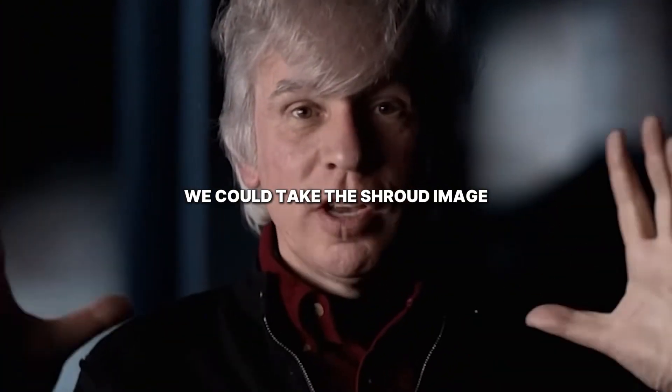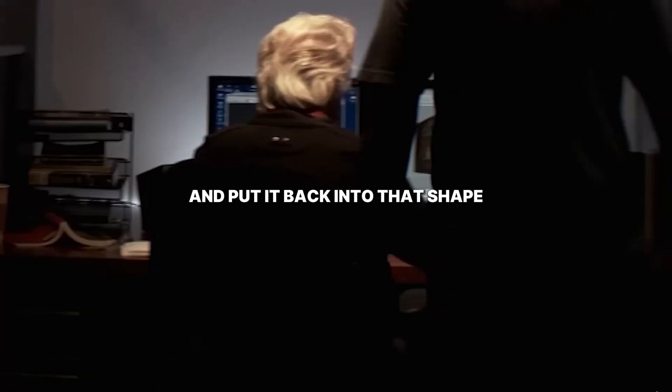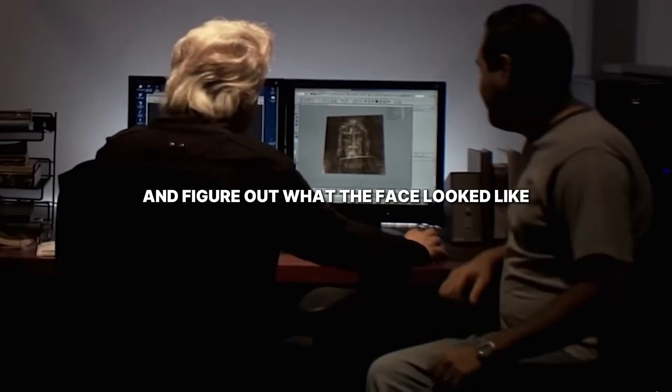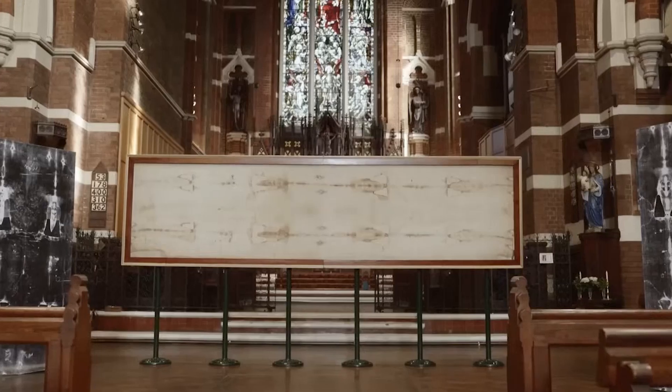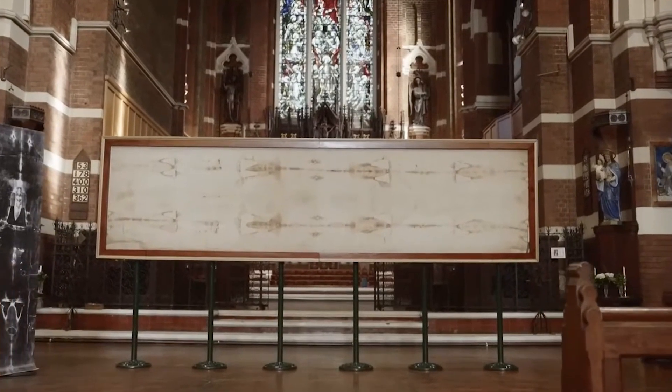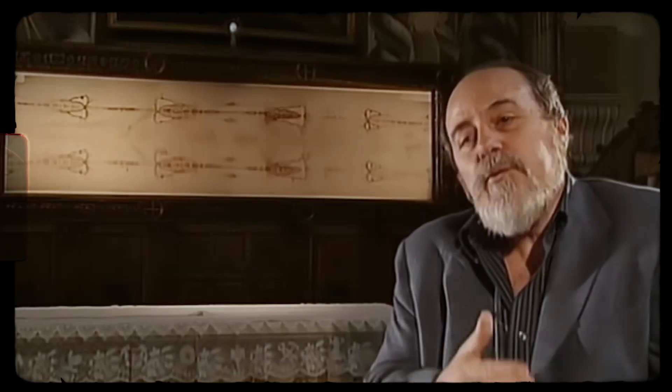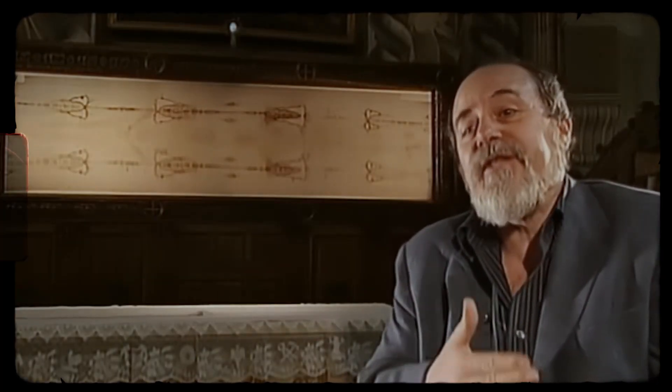But the result was a nightmare for skeptics. We could take the Shroud image and put it back into that shape and figure out what the face looked like. It gave us a blueprint. This is the story of what AI just found hidden in the Shroud of Turin.